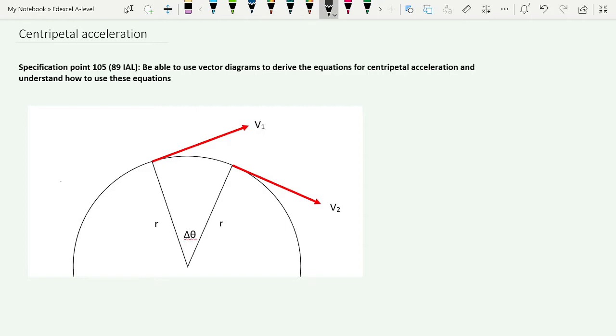When we've got an object moving in a circle, we should know already from our study at GCSE that the object's velocity at any point is at a tangent to that circle. So if we label this object in the picture here as A, then although the object is moving around in a circle, its instantaneous velocity at that point is at a tangent, and that is given by V1.